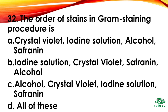Question 32: The order of stains in the Gram staining procedure is — option A: crystal violet, iodine solution, alcohol, safranin; option B: iodine solution, crystal violet, safranin, alcohol; option C: alcohol, crystal violet, iodine solution, safranin; option D: all of these. The right answer: option A — crystal violet, iodine solution, alcohol, and safranin.